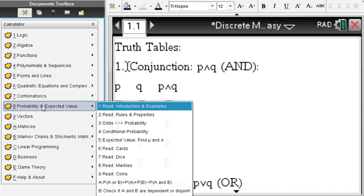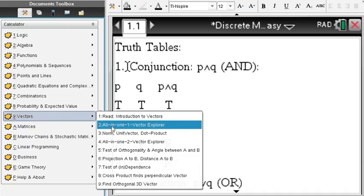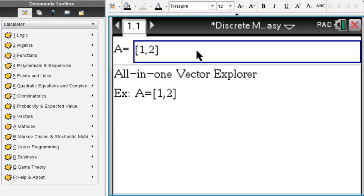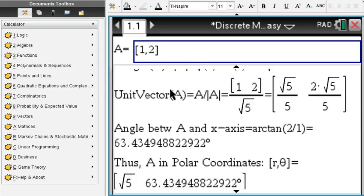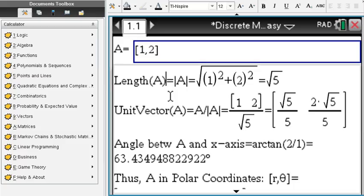Vectors: let's go into the all-in-one vector explorer. You enter a vector such as 1 comma 2, learn about its length, what's the unit vector pointing in the same direction, the angle the vector makes with the x-axis, and express the vector in polar coordinates.